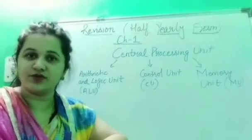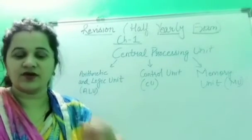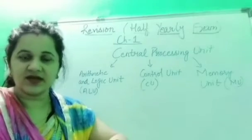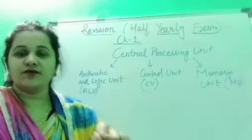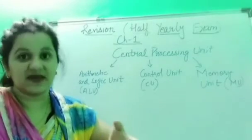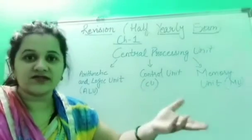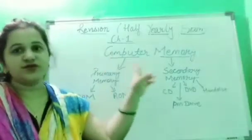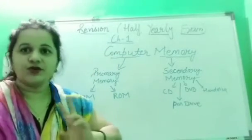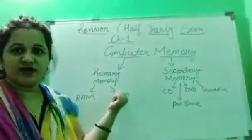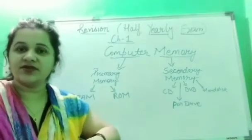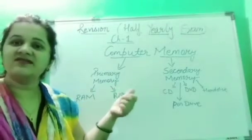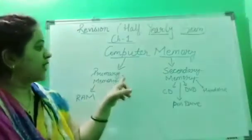Next comes the Memory Unit, which is responsible for storing all the data and instructions given to the computer. Just like you need pages in your notebook to write, a computer needs space to perform any task — that space is provided by the Memory Unit. Computer memory is divided into two parts: primary memory and secondary memory. Primary memory is the basic memory already built inside the computer system with smaller storage capacity.